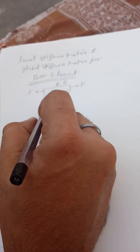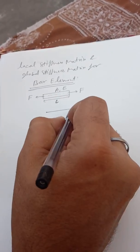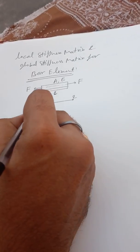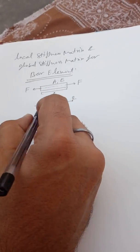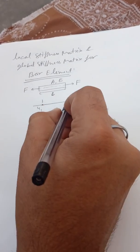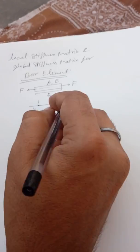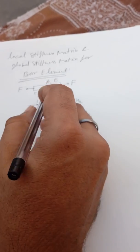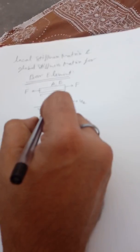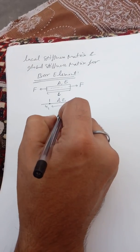Now we are converting into the FEM model. Here we have two nodes: node 1 and node 2. At node 1 we have displacement U1, and at node 2 we have displacement U2. The bar has area A, modulus of elasticity E, and total length L.